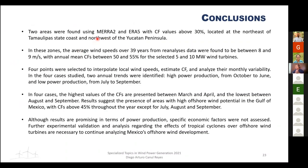In conclusion: two areas were identified using MERRA-2 and ERA5 with capacity factors above 30% — the northeast of Tamaulipas and the northwest of the Yucatan Peninsula. In these zones, the average wind speed is between 8 and 9 m/s over 39 years and the capacity factor is between 50 and 55% for both reference wind turbines. Four specific points were selected via linear interpolation, and the seasonal analysis identified a high production season from October to June and a lower production season from July to September. Peak capacity factors occur in March–April and lowest values in August–September.